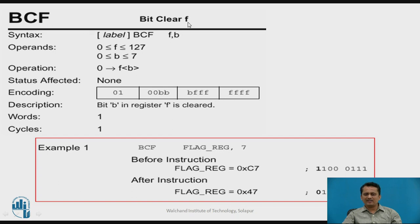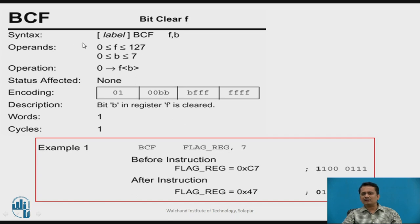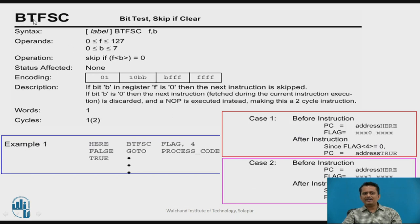The BCF instruction — Bit Clear File — clears a particular bit of a file register. The syntax is: BCF f, b, with the same range for f and b. It loads 0 into the specified bit. No flags are affected. It is a single-word, single-cycle instruction. In the example BCF FLAG, 7: if bit 7 of the flag register is set before execution, after executing BCF that bit gets cleared.